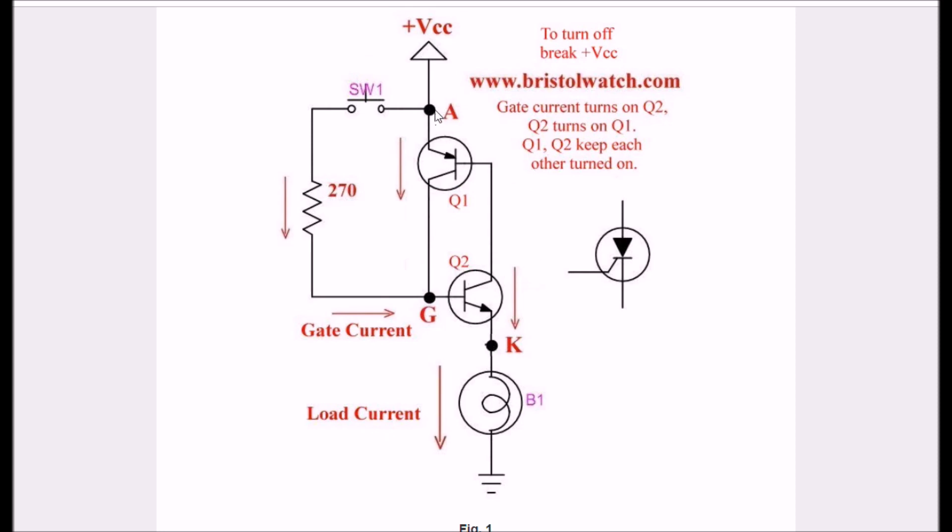When Q2 turns on, it creates an emitter-base current through Q1, thus turning on and saturating Q1. So Q1 turns on and it supplies a holding gate current for Q2. And the two will keep each other turned on until such time that I break the voltage,